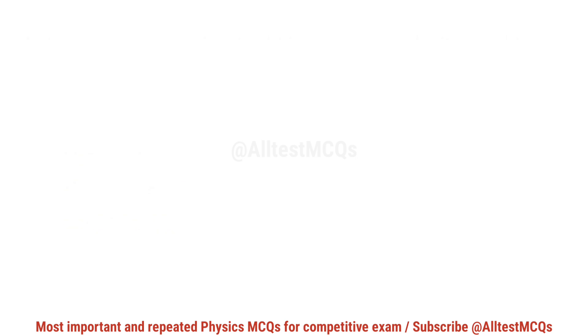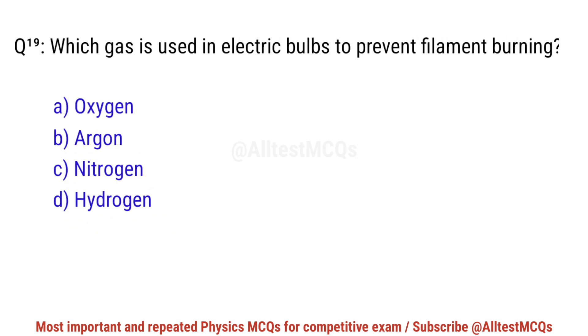Question No. 19. Which gas is used in electric bulbs to prevent filament burning? Right option is B. Argon.